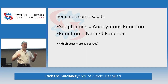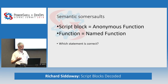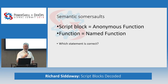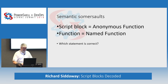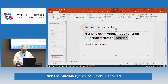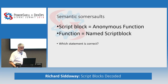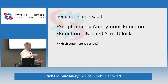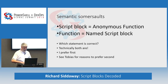Are you all awake? We'll have a semantic somersault. A script block is the same as an anonymous function. A function is a named script block. Both are true statements - or true-ish statements. Which one is correct? Technically both are. I prefer the first.